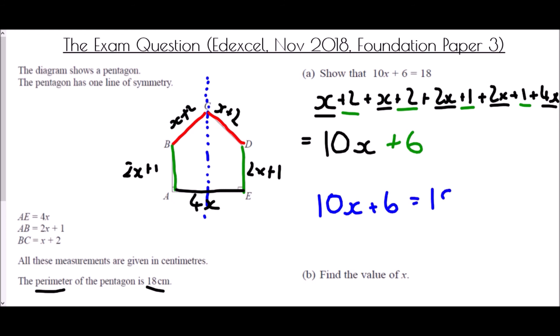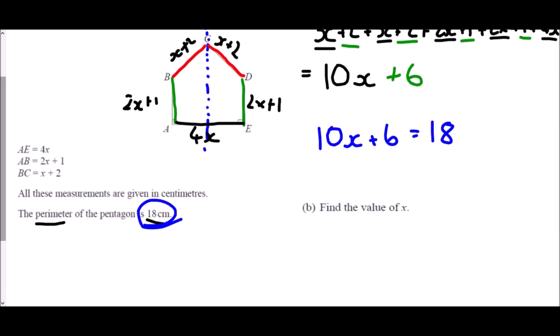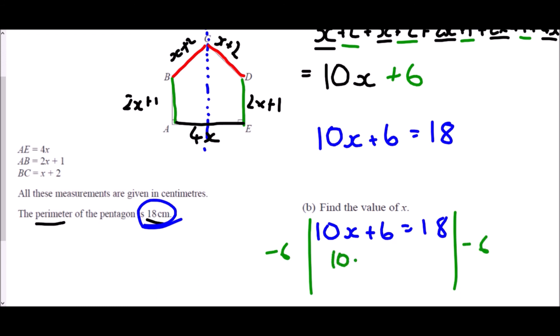We know 10x + 6 = 18 because of the given perimeter. In the second part we solve the equation: subtract 6 from both sides to get 10x = 12, then divide by 10. This came from a non-calculator paper, so we just move the decimal point one place, giving x = 1.2.